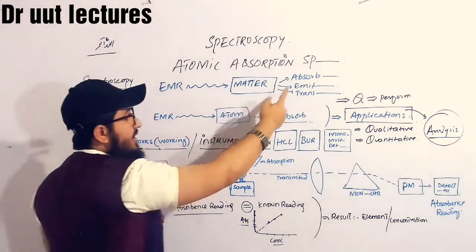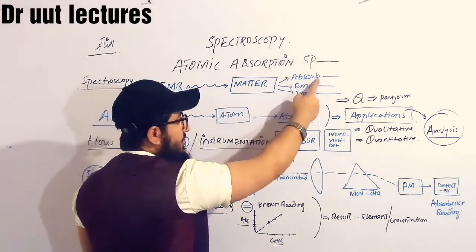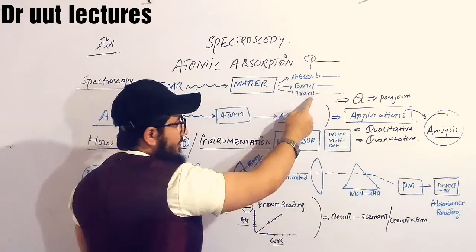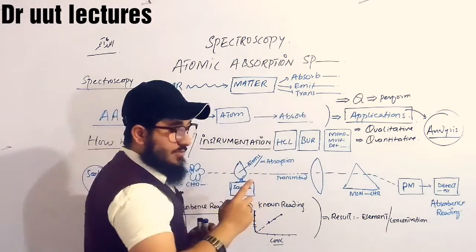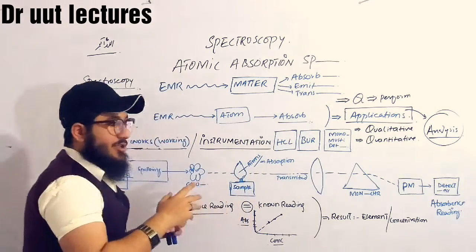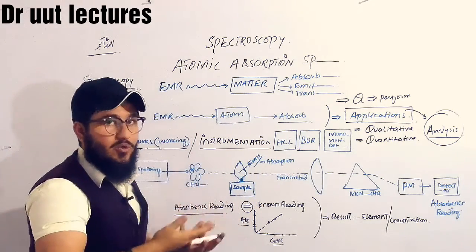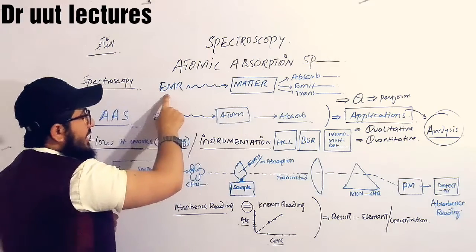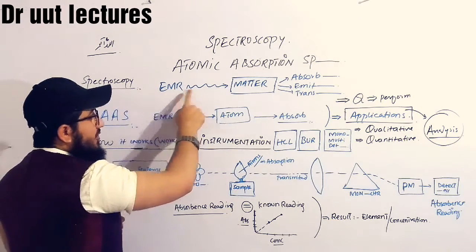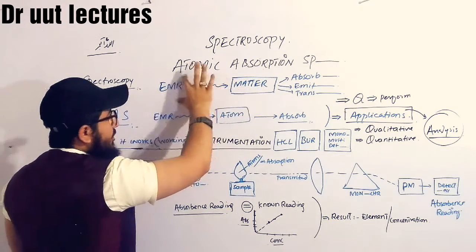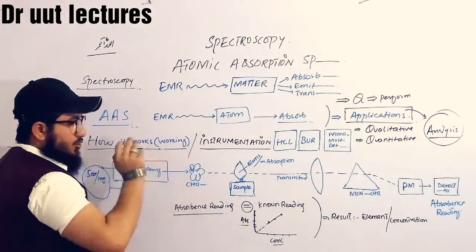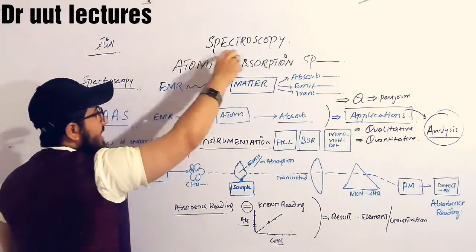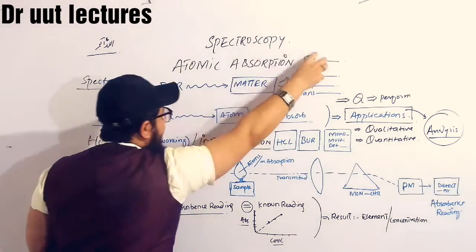This interaction may be in the sense of absorption, in the sense of emission, in the sense of transmission, or it may interact in different ways also. The interaction of electromagnetic radiation with matter is known as spectroscopy. So in today's lecture we are talking about Atomic Absorption Spectroscopy.